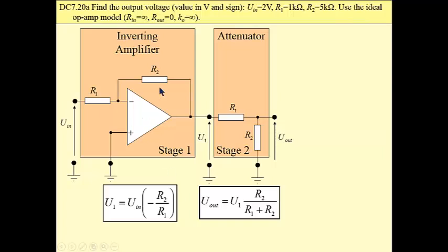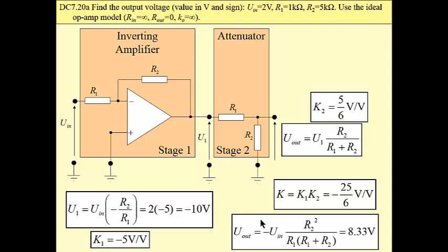And this ratio of feedback resistance R_2 to R_1. For attenuator, obviously, we have a voltage divider formula. Then we have to multiply these two gains.